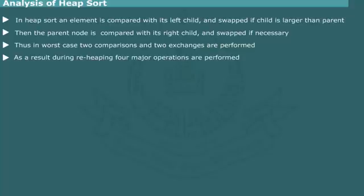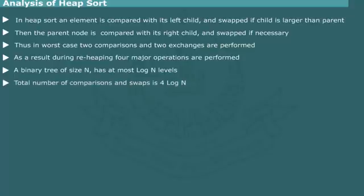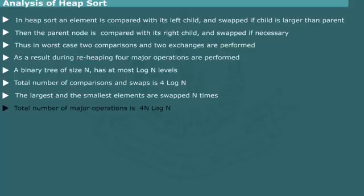In a preceding unit, we have seen that a binary tree of size n has at most log n levels. As such, the total number of comparisons and swaps would be 4 log n. In general, the largest and smallest elements are swapped n times. This means that the total number of major operations involved in the reheaping is at most 4 n log n.